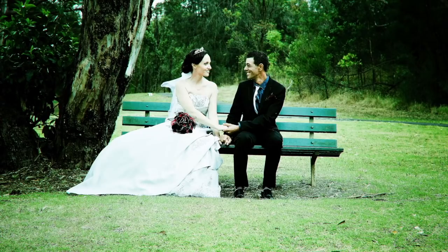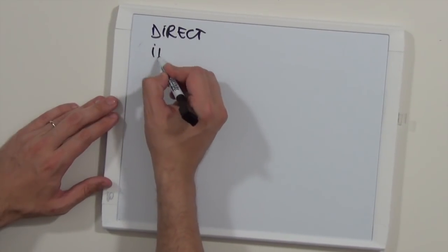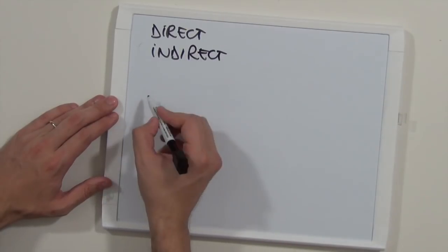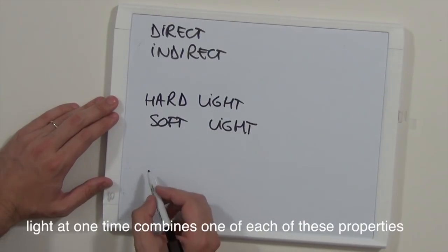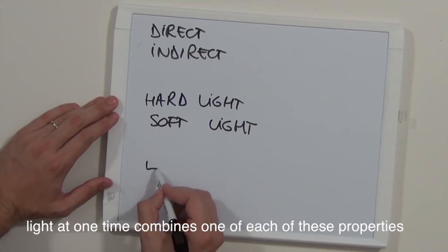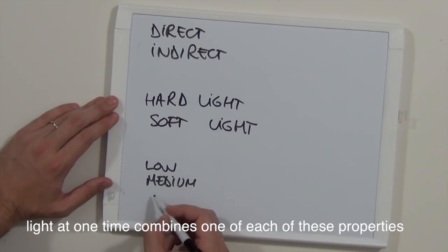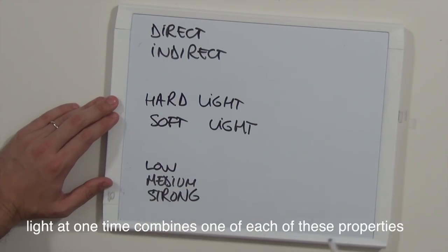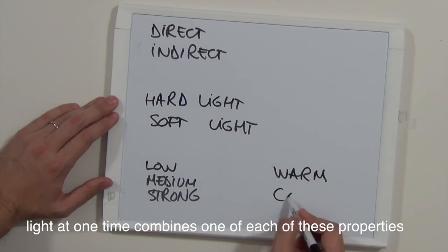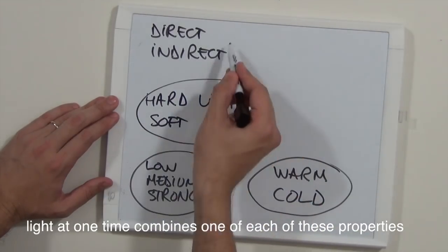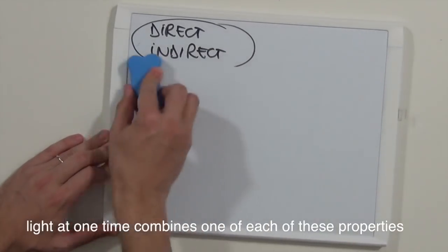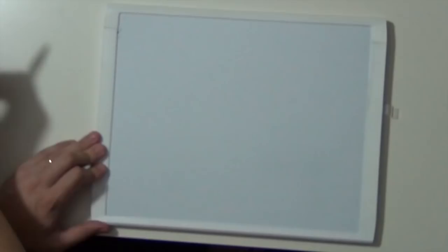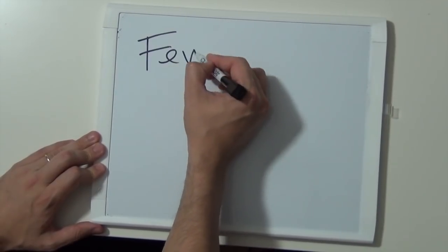So basically, we have classified light: depending on the source, we have direct light and indirect light; depending on quality, we have hard light and soft light; depending on properties, we have low, medium, or strong light; and depending on temperature or color, we have warm light or cold light. Remember these and you will be able to control them to your advantage.